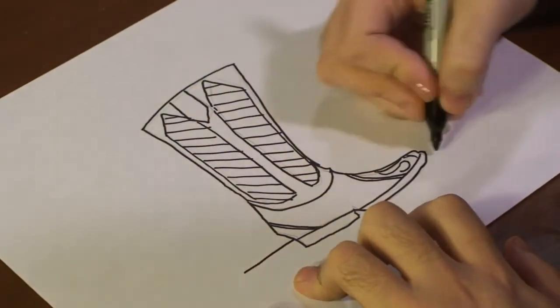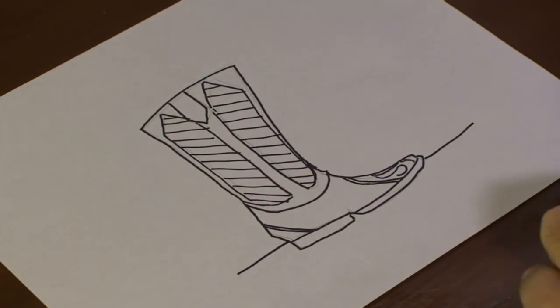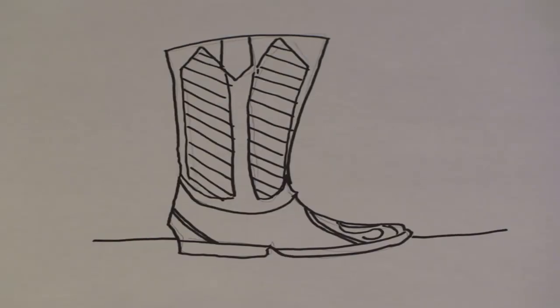Then we add some around and that is our western boot. And that's how you draw a western cowboy boot. I hope you enjoyed. I'll see you next time.